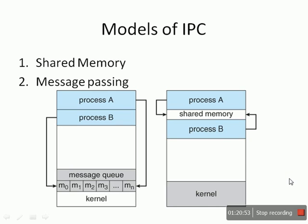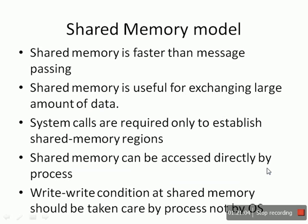When we want to share large data, the shared memory model of IPC is preferred. Shared memory is faster than message passing because no kernel intervention is required. Shared memory is useful for exchanging large amounts of data. System calls are required only to establish the shared memory region; once created, kernel intervention is not required to exchange data.